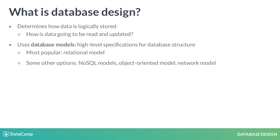Database models are high-level specifications for database structure. The relational model, which is the most popular, is the model used to make relational databases. It defines rows as records and columns as attributes. It calls for rules such as each row having unique keys. There are other models that exist that do not enforce the same rules.